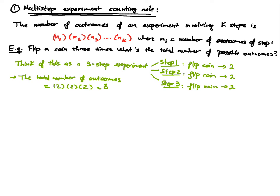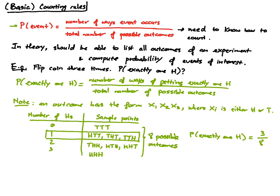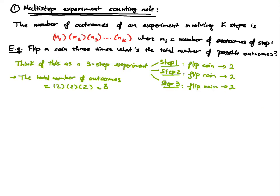Let's go back to the earlier example. There we had an experiment where we flip the coin three times, and by listing out the outcomes we said there were eight possible outcomes. Using the formula on the same experiment, we also get eight. So the formula works. Let's try another example.